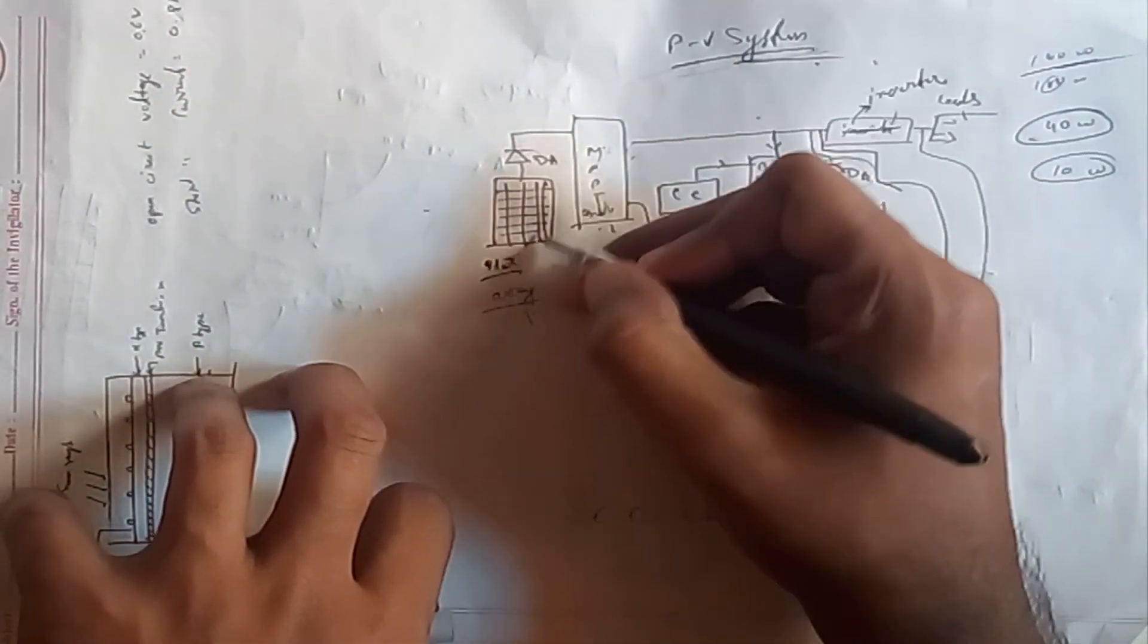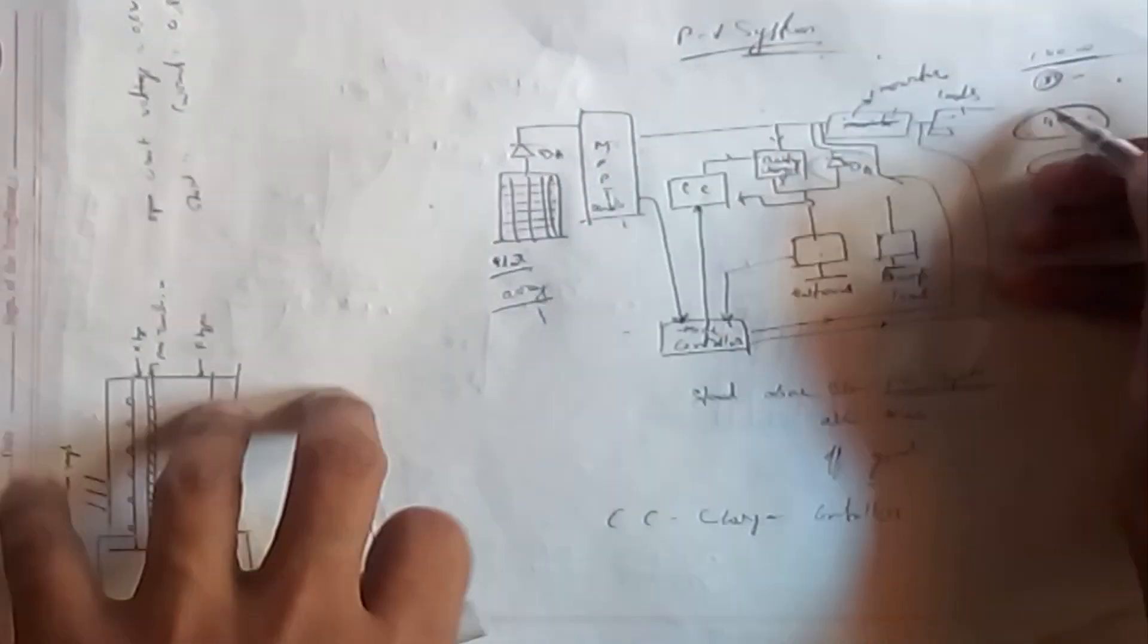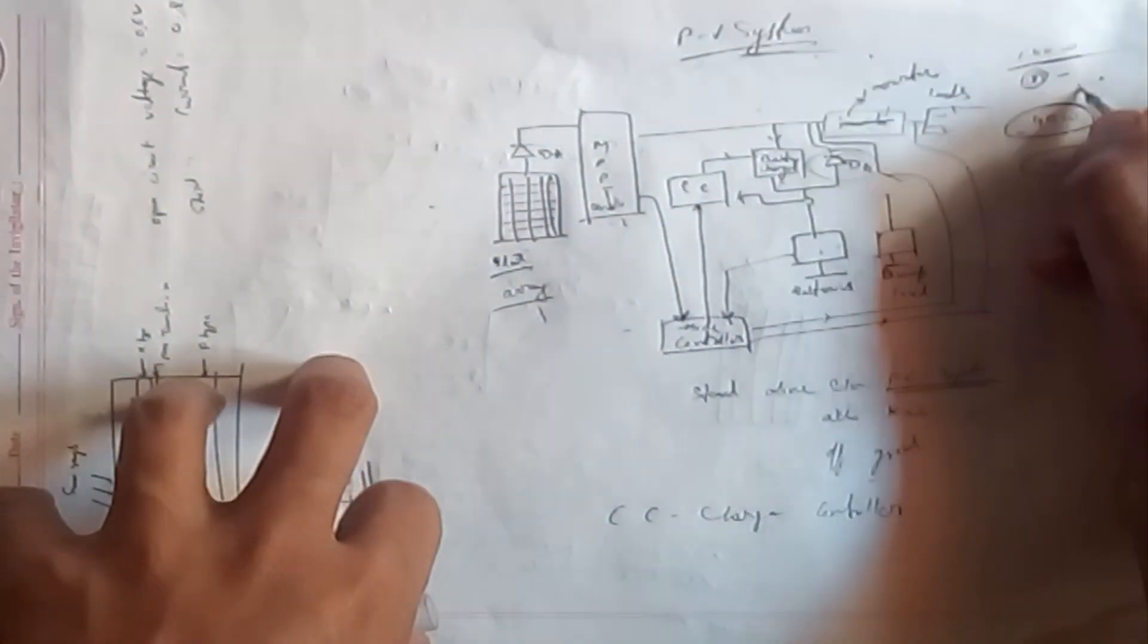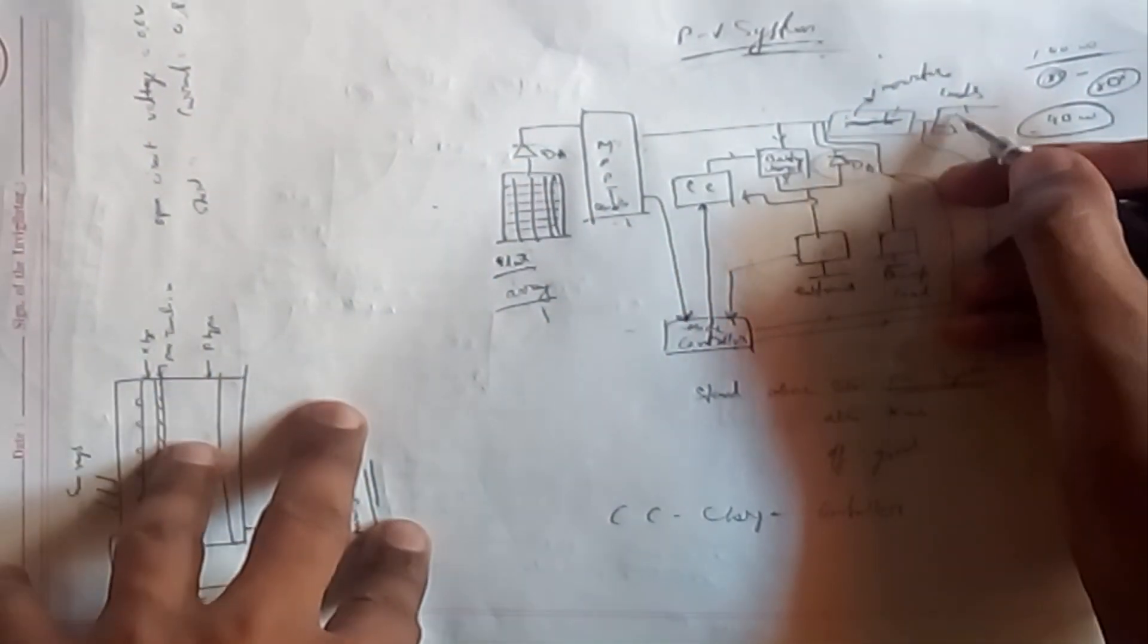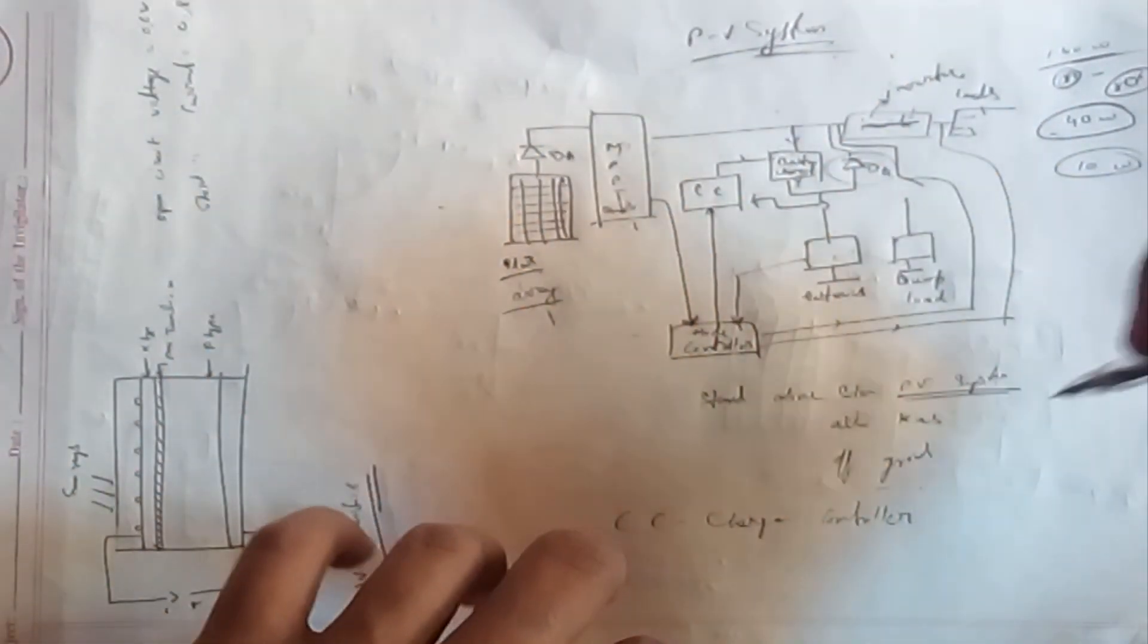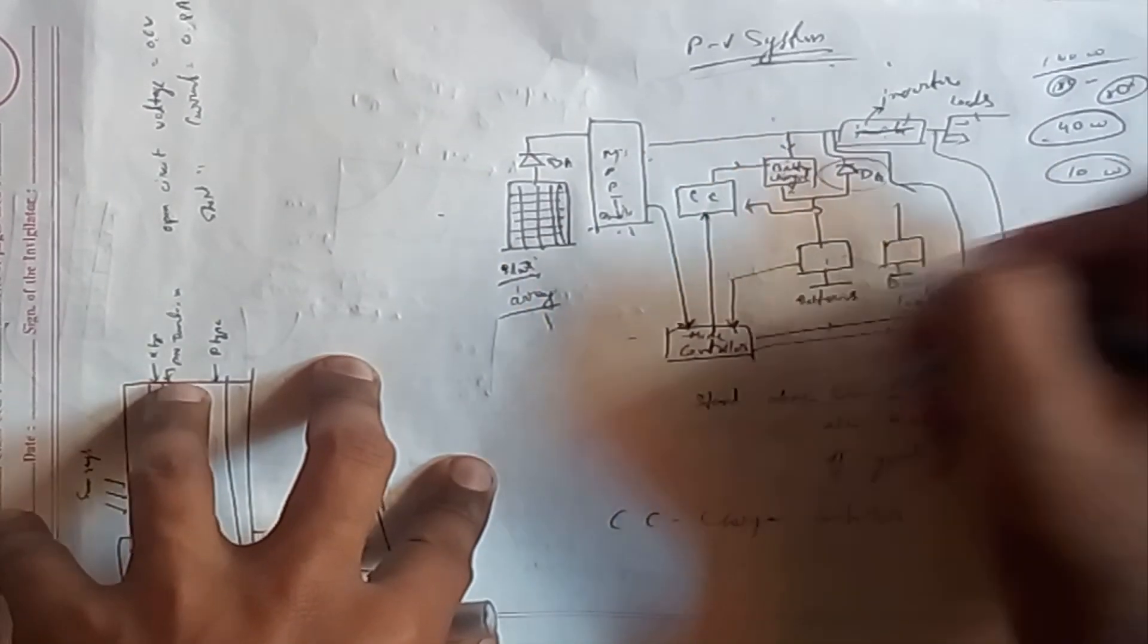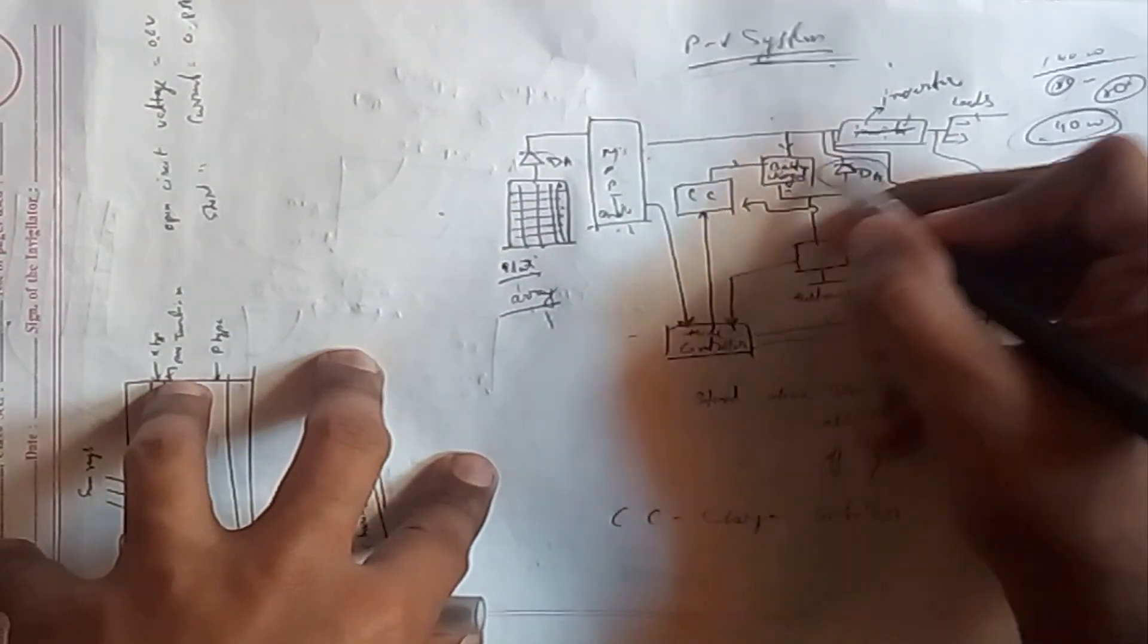Now this 50 watt is excess. What happens is this 50 watt is then given to the battery charger to charge the battery and store the power in the battery. This 50 watt is given to the battery, but the battery capacity is 40 watts. What will happen to the 10 watts? This 10 watt will be dumped through the dump load.